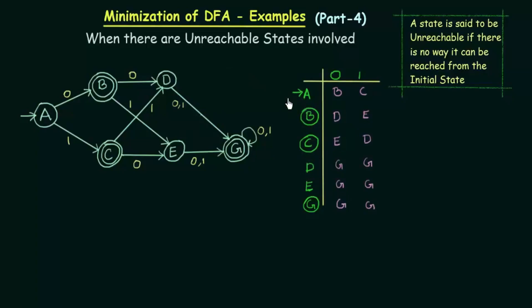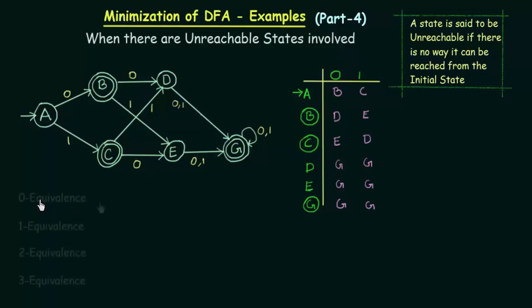A is the initial state and we have three final states: B, C, and G. This is the transition table. The procedure for minimizing is the same as we used to do, so let us write the equivalences for this.